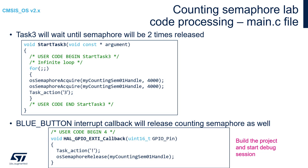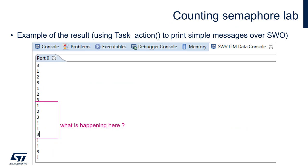Now we can extend our example by releasing the semaphore from the external interrupt callback. For this we need one external interrupt connected to the PC13 pin on the Nucleo board where our blue button is connected. Within the external interrupt callback HAL_GPIO_EXTI_Callback, which is defined as weak within the HAL GPIO module, we need to send an exclamation mark over the SWO interface using the task action function and release our semaphore. After this, please compile the code, start a debug session, open the SWV ITM console and start the application.